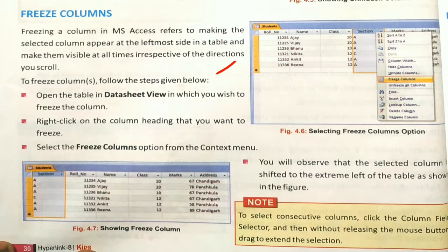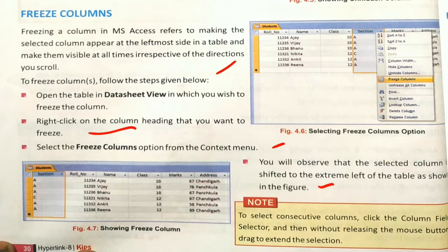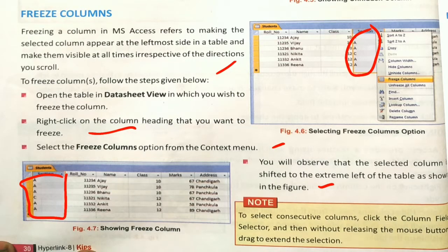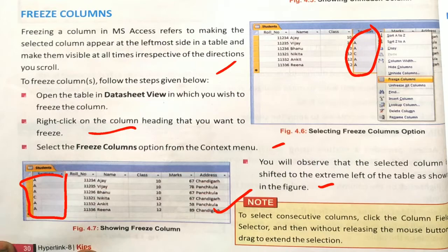Right-click on the column heading that you want to freeze and select the Freeze option from the context menu. You will observe that the selected column shifts to the extreme left of the table. To select consecutive columns, click on the first column field and, without releasing the mouse button, drag it to select all the columns you want. In this way you can select consecutive columns.